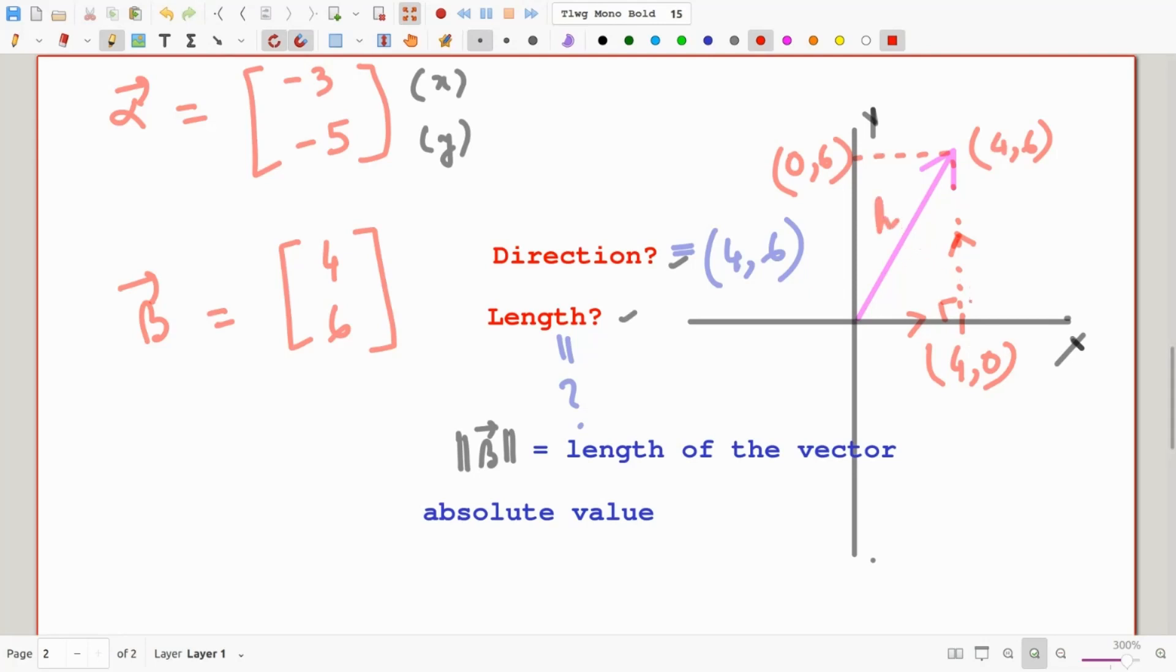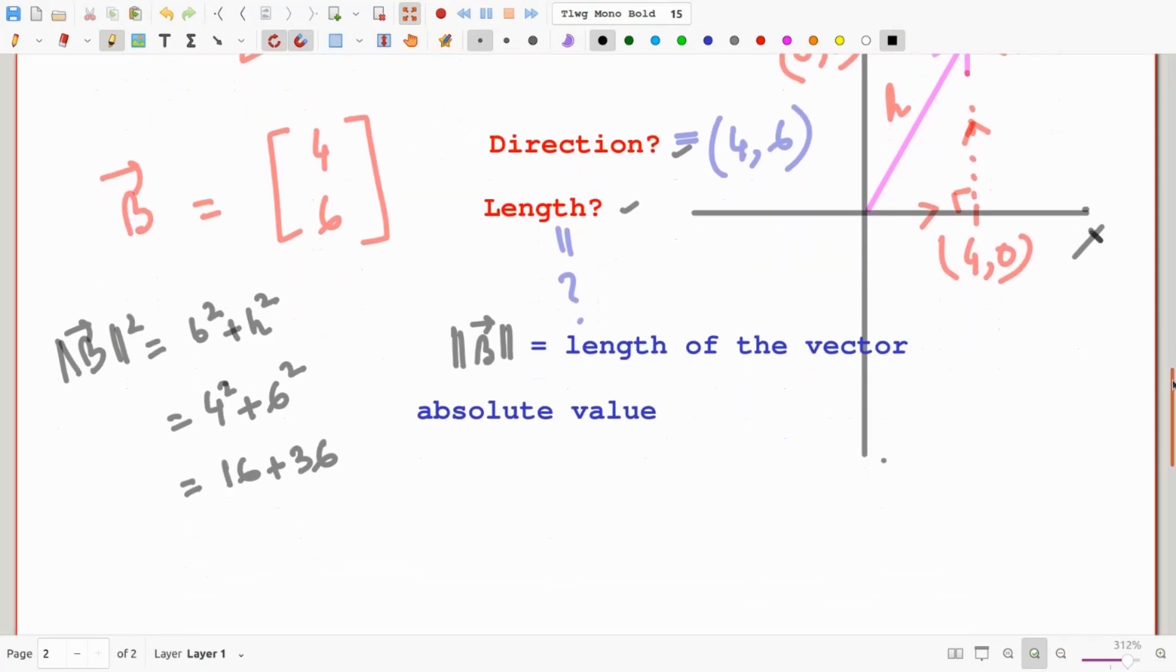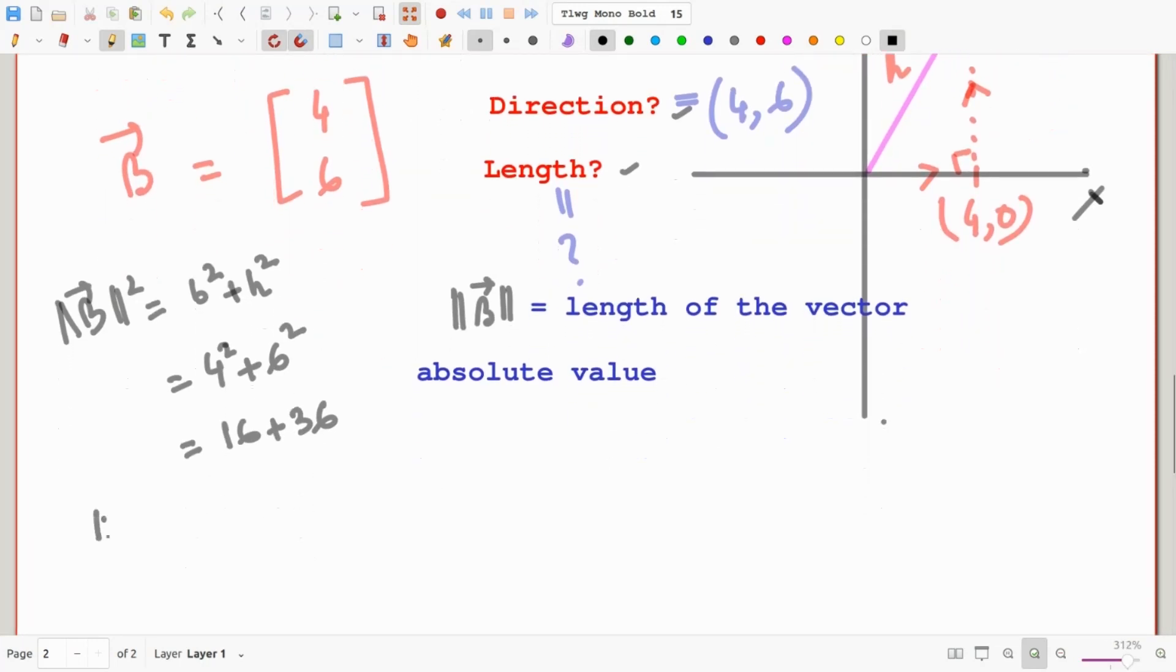And so therefore we can just use the Pythagorean theorem. The length of beta squared is equal to the base squared plus the height squared, so 4 squared plus 6 squared. So this is a direct application of the Pythagorean theorem. And if we just take the square root of both sides, the length of beta is equal to the square root of 4 squared plus 6 squared, which simplifies to the square root of 52.